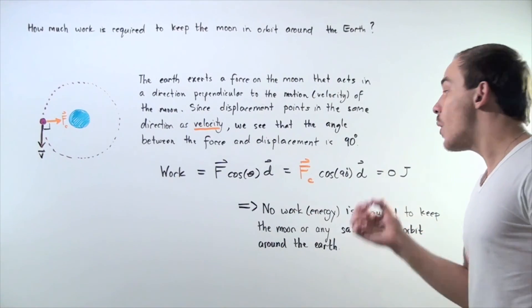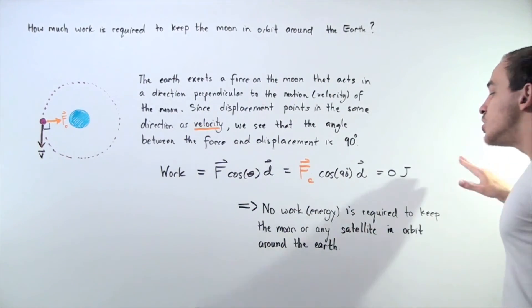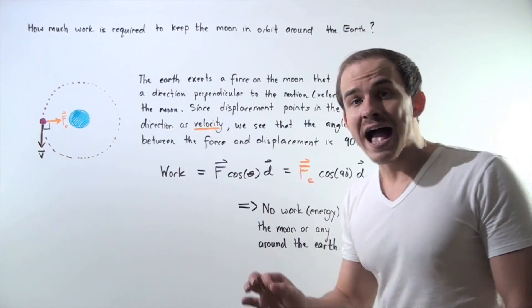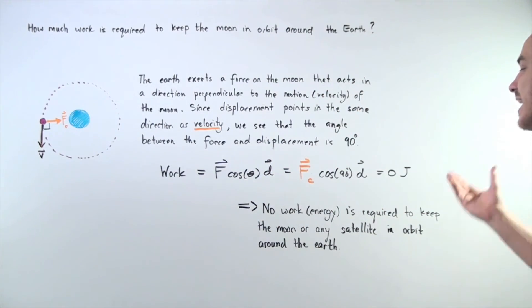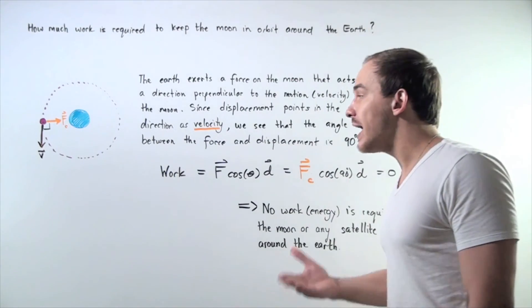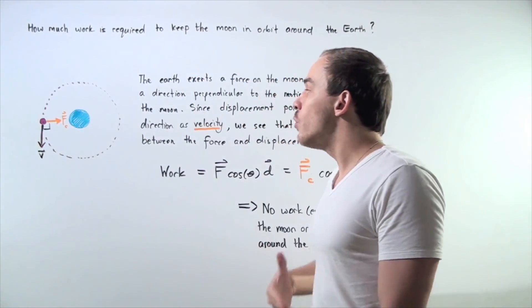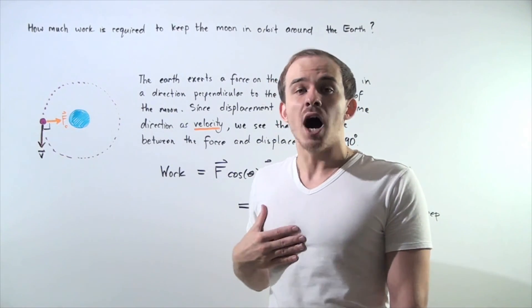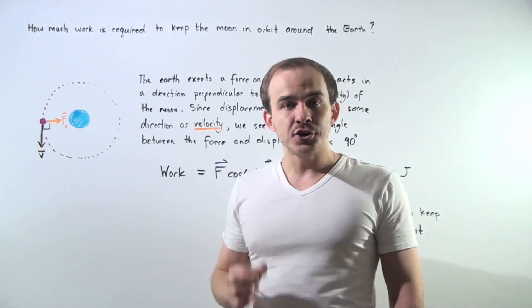Once again, no work, no energy is required to keep the moon and in fact any other satellite in orbit around the earth. That's exactly why our satellites can orbit the earth without expending, without us expending any energy.